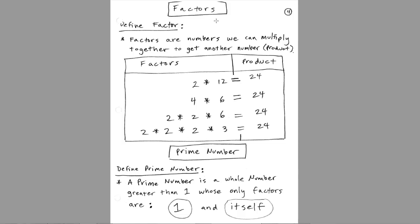On page 4, we need to remind ourselves what a factor is. Factors are numbers we can multiply together to get other numbers called products. For example, 2 and 12, when you multiply them, you get 24. Those are the factors, and 24 is the product.